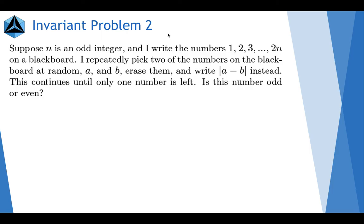All right, invariant problem 2. Suppose n is an odd integer and I write the numbers 1, 2, 3 through 2n on a blackboard. I repeatedly pick two of the numbers on the blackboard at random, A and B, erase them, and write the absolute value of the difference instead. This continues until only one number is left. Is this number odd or even?